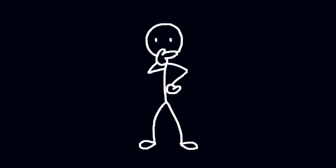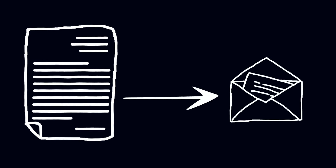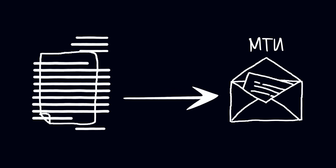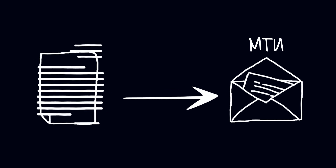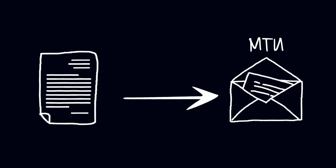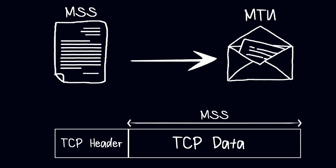Here's another way to think about it. Imagine you're trying to send a long letter to a friend, but you can only send it in small envelopes because the postal service limits the size of each envelope. The maximum size of the envelope represents the MTU. You need to carefully divide the letter into smaller sections that can fit into each envelope. The maximum amount of text you can fit into each envelope without wasting any space represents the MSS — just like how the MSS represents the maximum amount of TCP payload data that can be carried in each TCP segment without wasting any space.